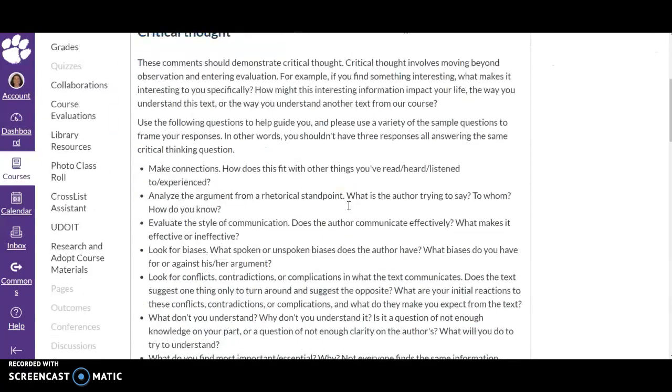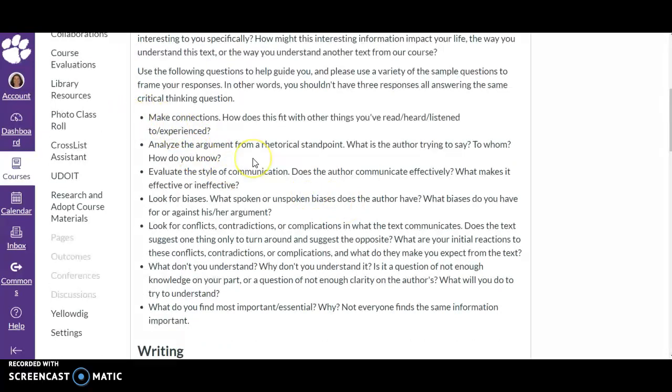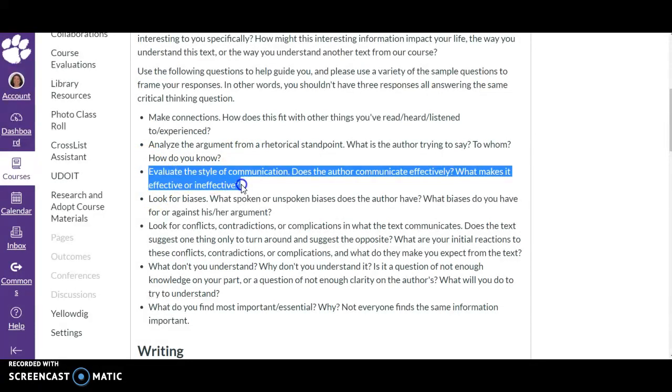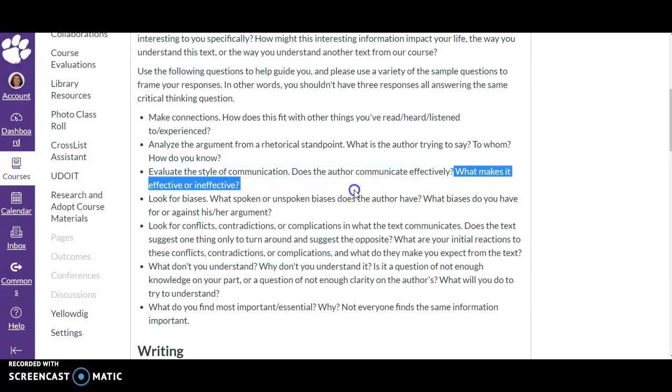I'm going to scroll down to the questions that are listed here in bullet points. Let's say you want to look at how the author is communicating in this text. Maybe you found it particularly clear or maybe you found it particularly difficult to understand, and that's something you want to think critically about. So you will evaluate the style of communication. Does the author communicate effectively? That's what drew you to this question, because you had a reaction—either the author really did or really didn't.